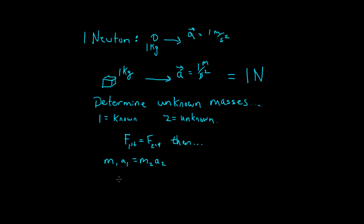And if I divide both sides by m1 and a2, what I end up getting is the unknown mass over the known mass is equal to the known acceleration over the unknown acceleration. Alright, so how do we use that to determine other masses?